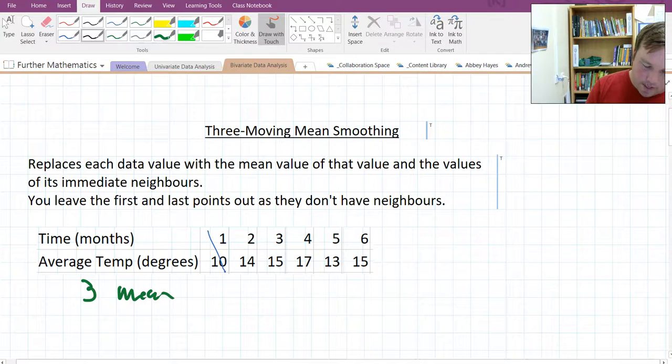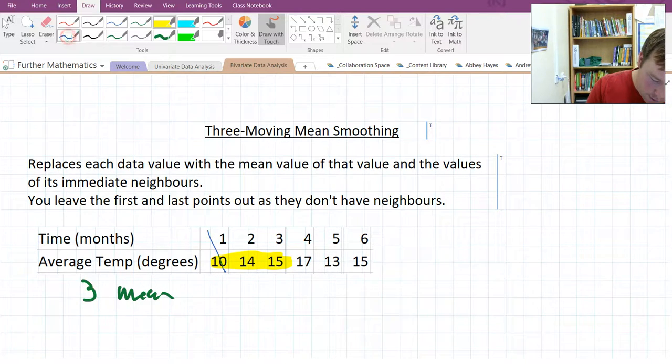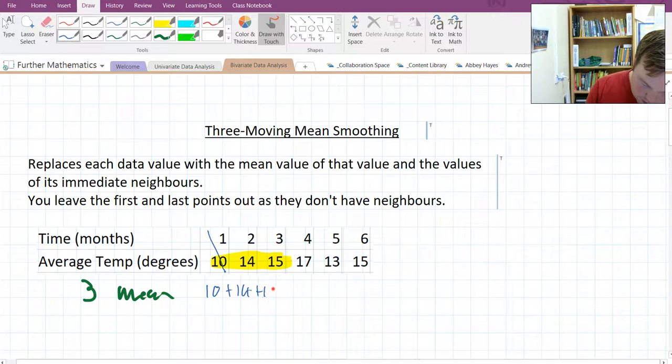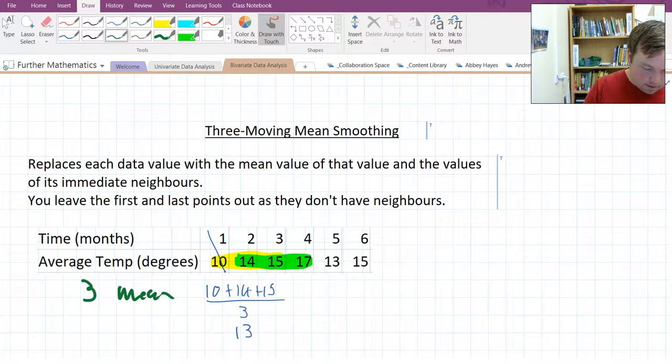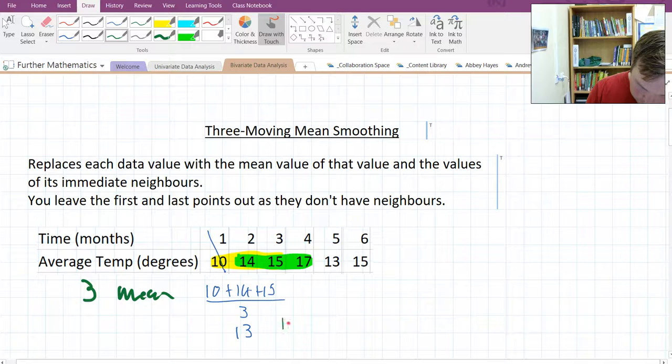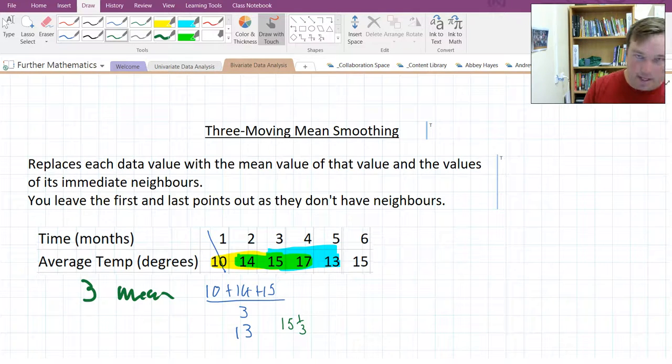We're going to look at two. We take the values surrounding two and including two. We're taking the mean of these three. So to take the mean of these three, we do 10 plus 14 plus 15 divided by 3, which is 39 divided by 3 is 13. And then for 3, we take 14, 15, 17. 46 divided by 3 is 15 and 1 third. Then we take the next three, add them together, divided by three.